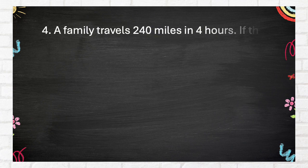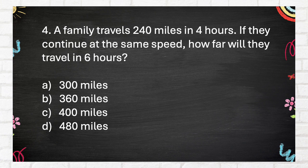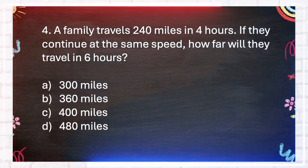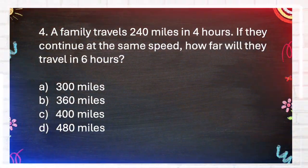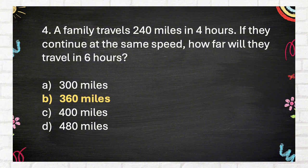Number 4. A family travels 240 miles in 4 hours. If they continue at the same speed, how far will they travel in 6 hours? A. 300 miles. B. 360 miles. C. 400 miles. D. 480 miles. The correct answer is B, 360 miles.